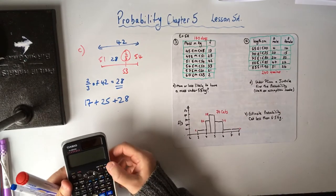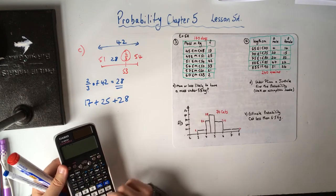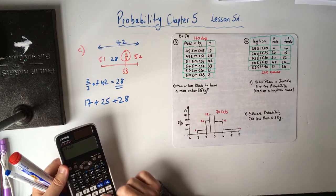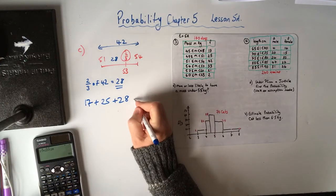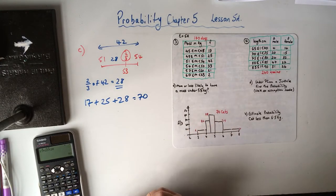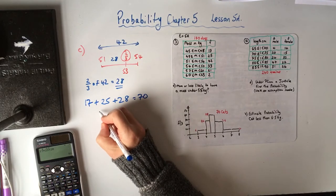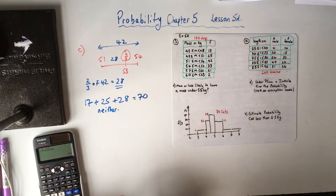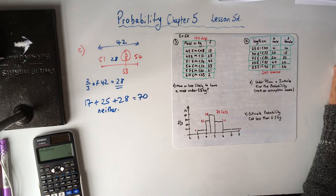So all together, less than 53 kilograms, we've got 17 dogs, we've got 25 dogs, and then we've got 28 of the 42 within that group using interpolation, and if we add all of those numbers up, 17 plus 25 plus 28 is equal to 70. So it is 70 of the dogs. Is it more or less likely to have a mass under 53? Well it's dead evens, it's neither because it's the middle number. 70 dogs are under 53, so 70 dogs are over 53.